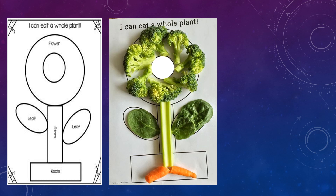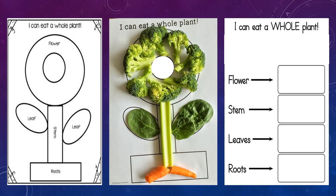For the stem section, think about which stems we eat and paste them there. Similarly, paste the leaves you eat in the leaf column, and place the edible flowers in the flower section — you can stick or draw them. Alternatively, you can write 'I can eat a whole plant' and use arrows pointing to boxes where you stick or draw the edible flower, stem, leaves, and roots. I hope you have understood the activity — thank you so much!